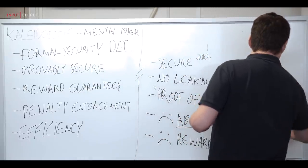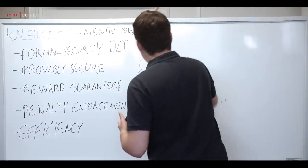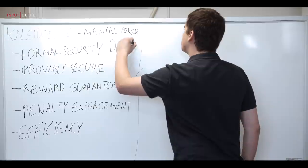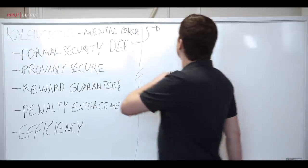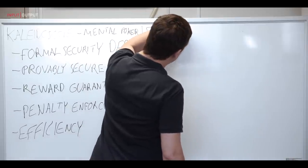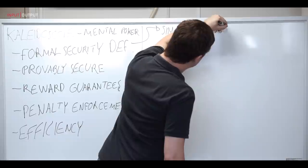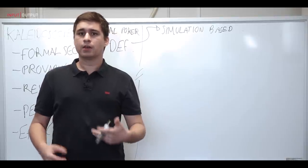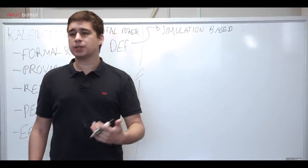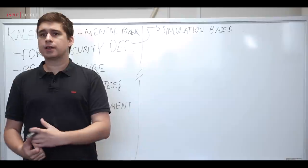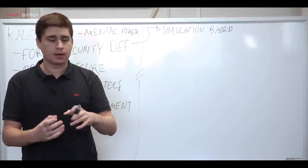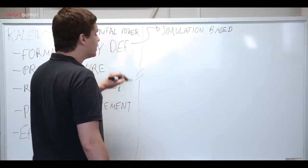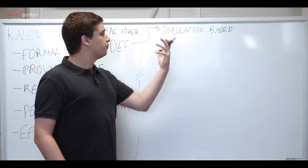So let's look a little bit into how we achieve each of these characteristics for Kaleidoscope. So let's first have a look at the formal security definition. We have a full-blown simulation based definition, which is the de facto standard in providing meaningful security definitions for cryptographic protocols. So we have a simulation based definition that captures the whole game of poker. Instead of basically showing that individual card operations are secure by themselves, we capture the whole flow of a game of poker. And we then prove that our protocol fulfills the simulation based definition.